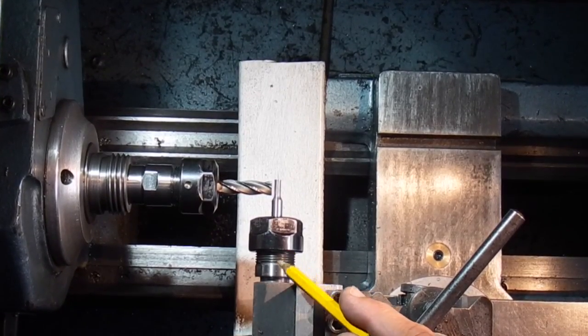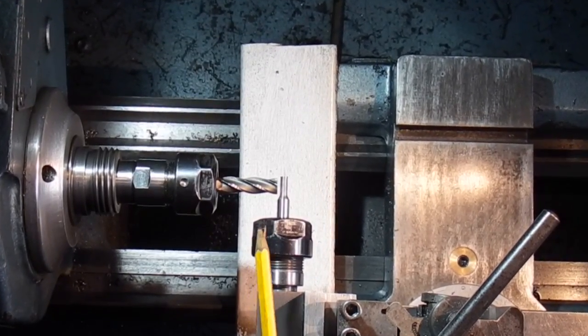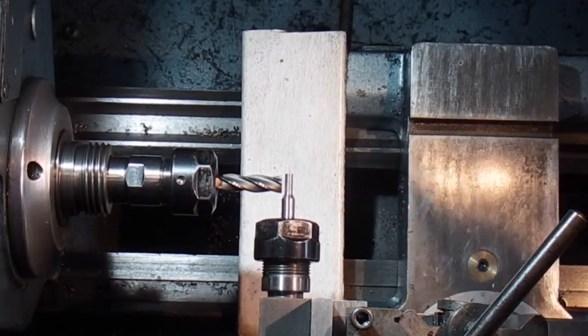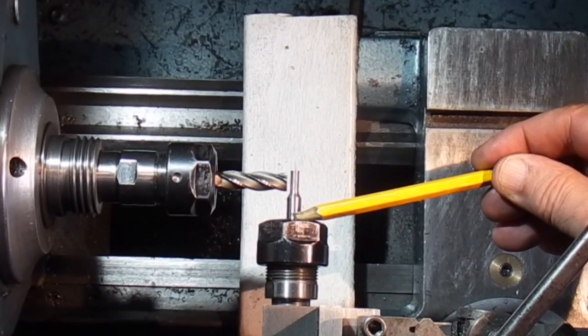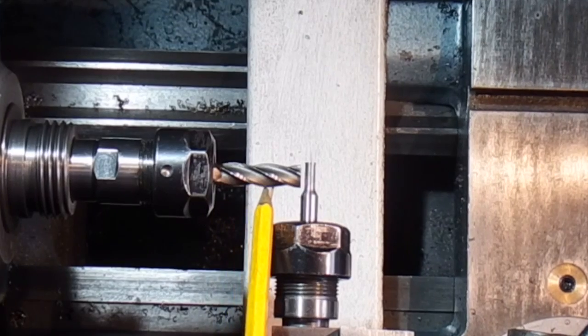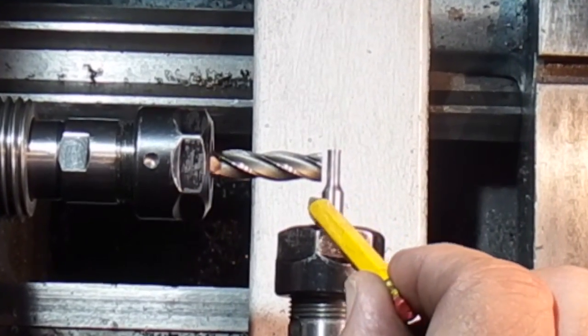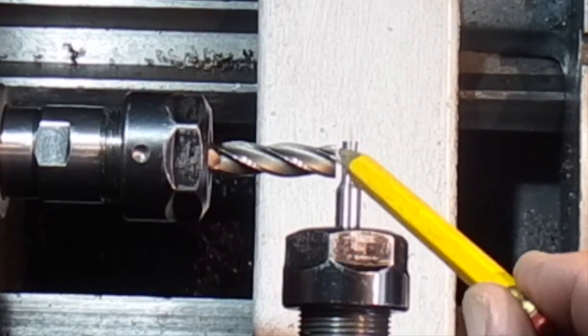I fitted the indexing fixture in the tool post, squared it up, put the workpiece in the indexing fixture and in the headstock I've put the end mill. I just want to machine a flat on each side of this part and a flat on the top.